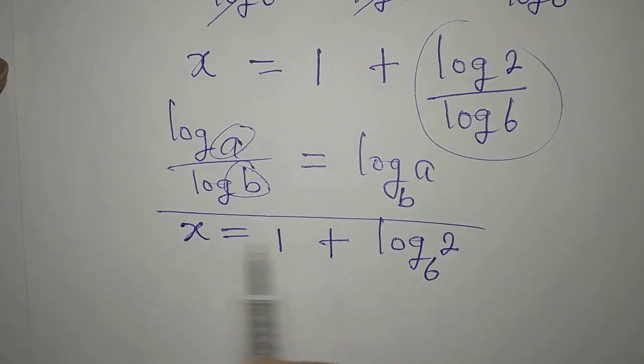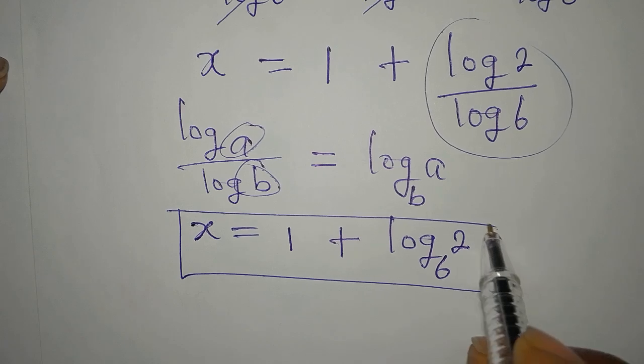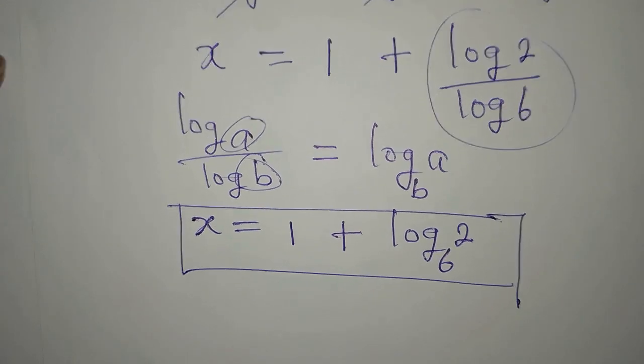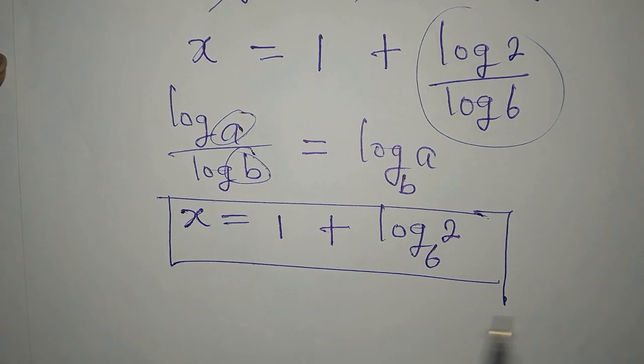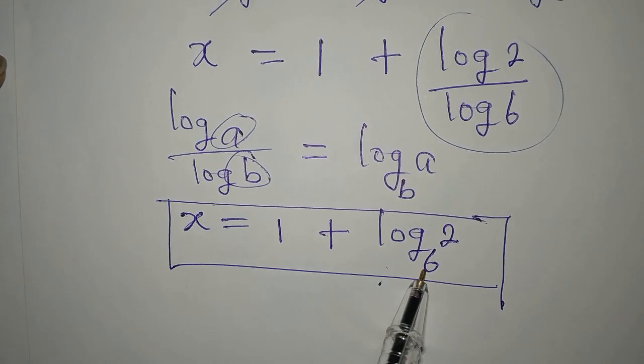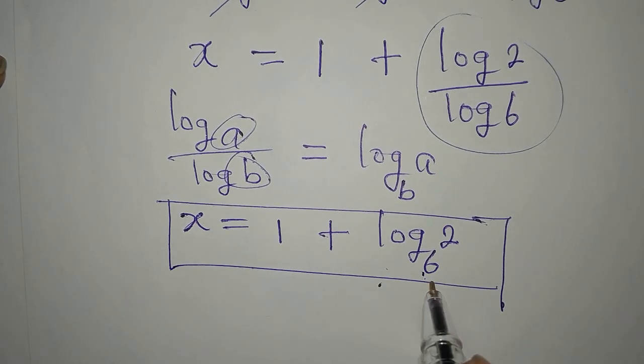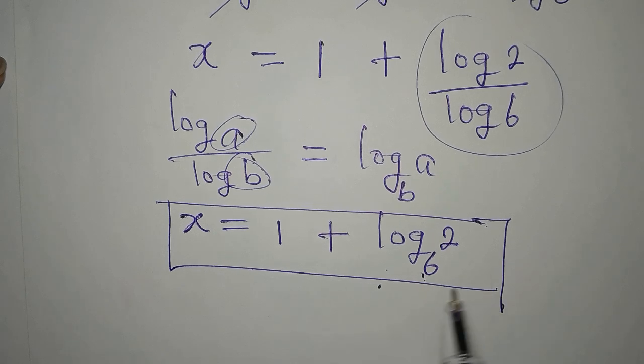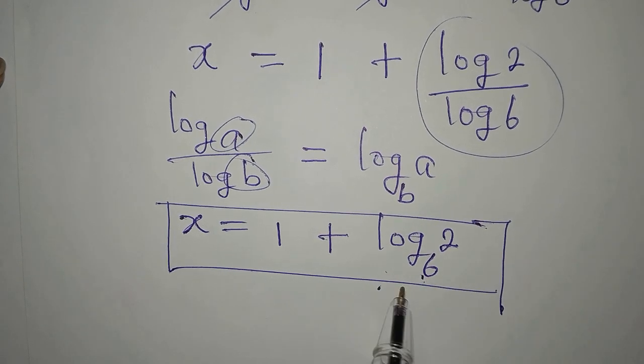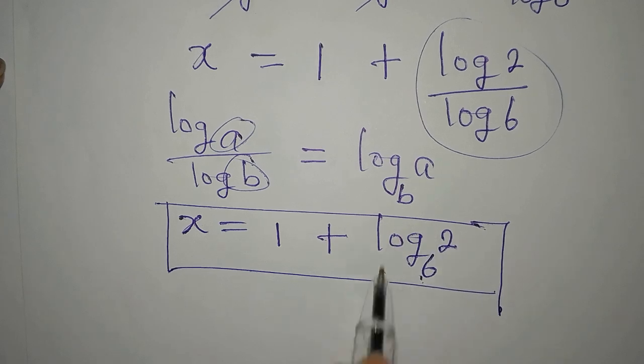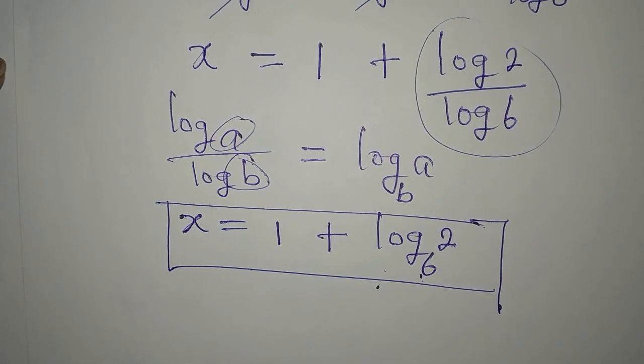So this becomes the value of x. And if you want to have your answer in decimal, then you have to use log 2 to base 6. Some calculators will not give you log to base 6, so it will be log 2 divided by log 6, which will give you the same value.